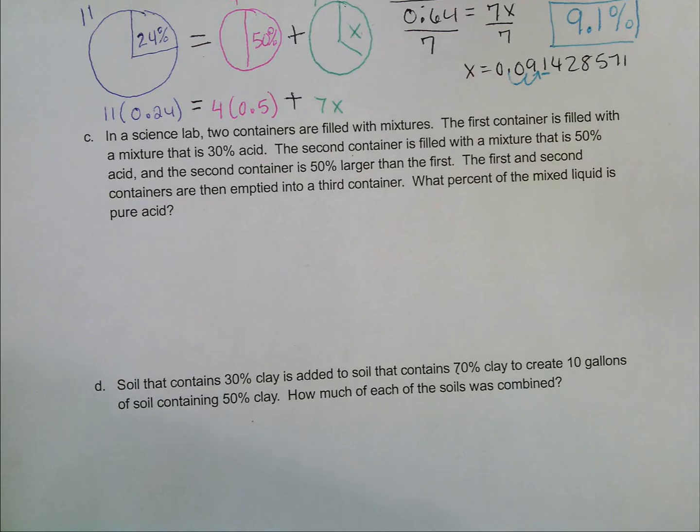Part C. In a science lab, two containers are filled with mixtures. The first container is filled with a mixture that is 30% acid. The second container is filled with a mixture that is 50% acid. The second container is 50% larger than the first. The first and second containers are then emptied into a third container. What percent of the mixed liquid is pure acid?